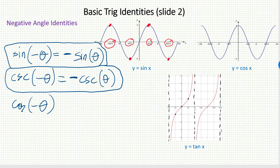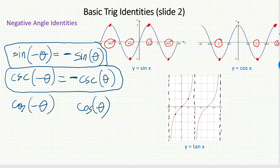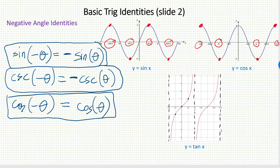For cosine, looking at the graph: cosine of pi is negative 1, and cosine of negative pi is also negative 1. Cosine of 2pi is 1, and cosine of negative 2pi is also 1. For cosine, the value of the negative angle is an exact match — cosine of negative theta equals cosine theta. This is because the cosine function is an even function, symmetrical with respect to the y-axis. Since secant matches cosine and is also an even function, secant of negative theta equals secant theta.